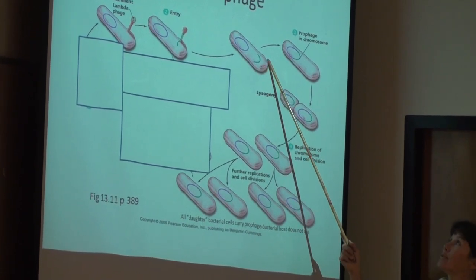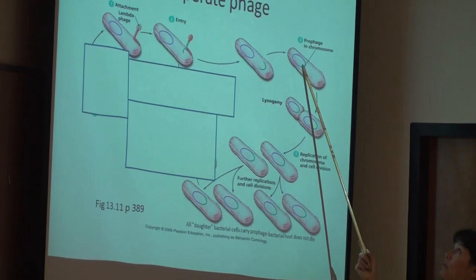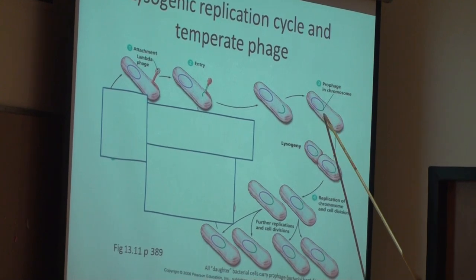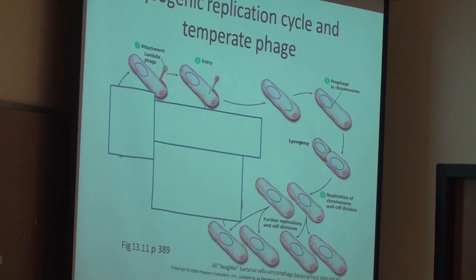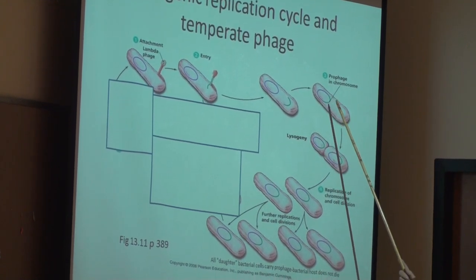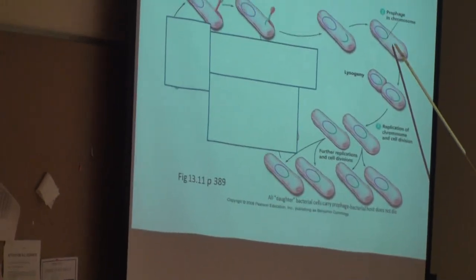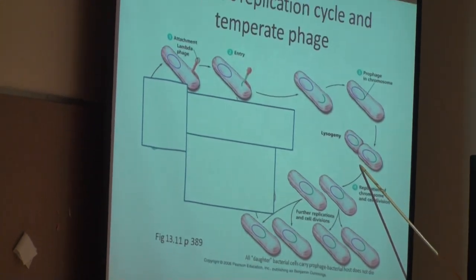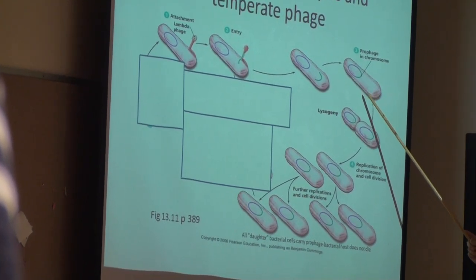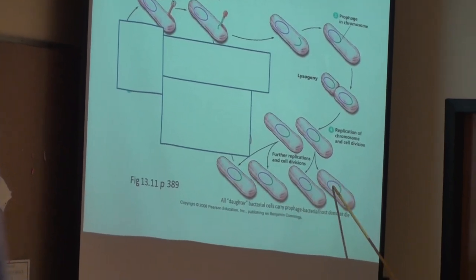What happens to the phage DNA? The phage DNA will insert itself — integrate itself — into the bacterial chromosome. Phage DNA inserted into a bacterial chromosome has a new name: it's called a prophage, meaning 'before a phage.' As far as the E. coli's DNA polymerase is concerned, that prophage DNA is now part of the bacterial chromosome. It will be replicated whenever this bacterium divides. So that prophage will be passed down generation after generation to all descendants of the original infected bacterium. This bacterium is referred to as a lysogen or lysogenized bacterium.